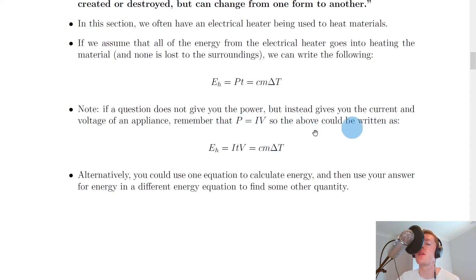So the above could be written as E_H equals ITV, where all we've done there is replace the P in this equation with IV from P equals IV. And this is also equal to CM delta T. So this is just another way of equating these two expressions, if you're given the current and voltage and time in a question.